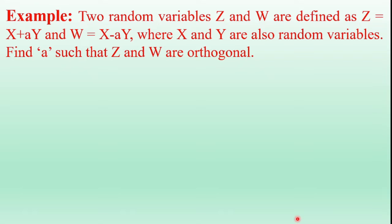The example is: two random variables, capital Z and capital W, are defined as Z equals X plus aY and W equals X minus aY, where capital X and capital Y are also random variables. Find the value of small a such that capital Z and capital W are orthogonal.